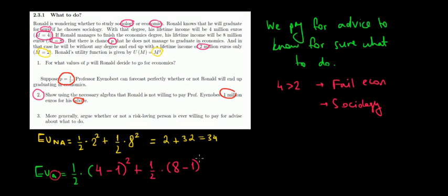So we're left with 8 minus 1, and the expected utility from it would be also to the power of 2. So that would equal 1 over 2 times 3 to the power of 2, which is 1 over 2 times 9, plus 1 over 2 times 8 minus 1, which is 7 to the power of 2, that's 49.